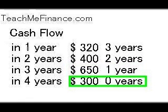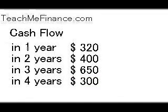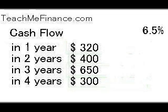Four years from today, you're going to get $300. However, we're trying to figure out how much money you're going to have four years from today, so that $300 won't have any opportunity to earn interest — it's just going to be $300. Now, one thing you have to do is assume some sort of an interest rate. In this case, we're going to assume 6.5%, so after you receive this money, you will earn 6.5% compounded monthly.